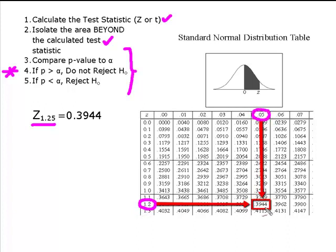And I see that that's associated with this area of 0.3944. And based on this table, I know that 0.3944 is the area under the curve that falls between the mean and my calculated test statistic, which in this case is a z.